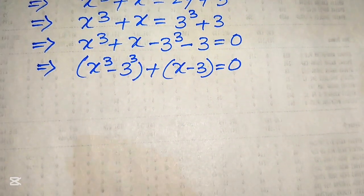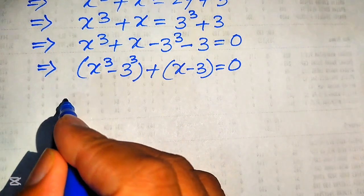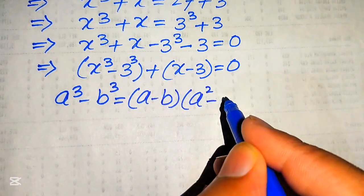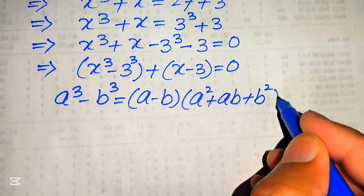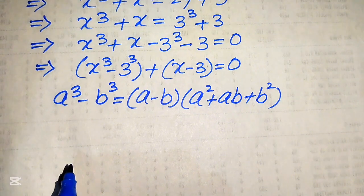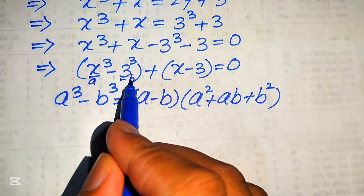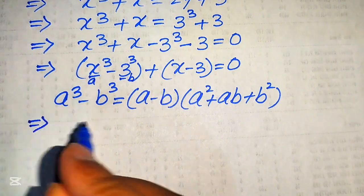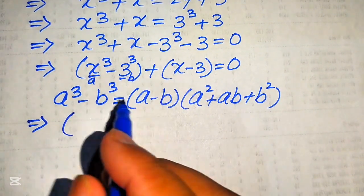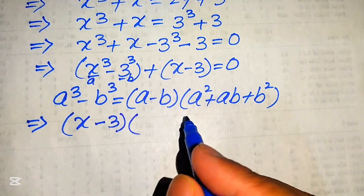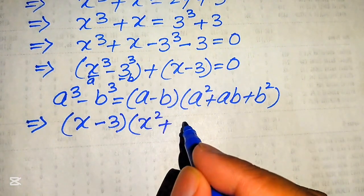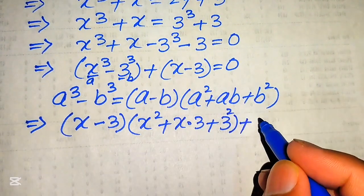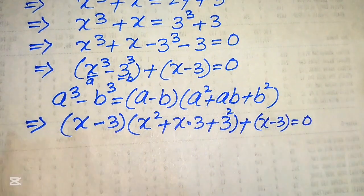To solve this, we use the difference of cubes formula: a cubed minus b cubed equals (a minus b)(a squared plus ab plus b squared). Here a equals x and b equals 3. Substituting these values, x cubed minus 3 cubed becomes (x minus 3)(x squared plus 3x plus 9), and we still have the term plus (x minus 3) equals 0.